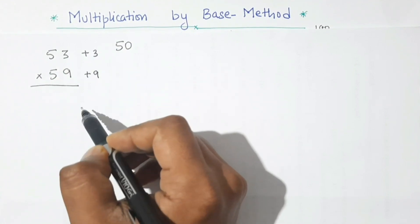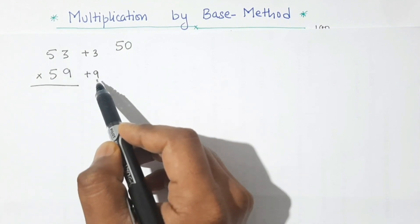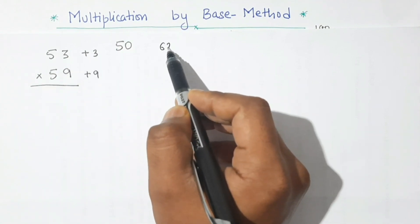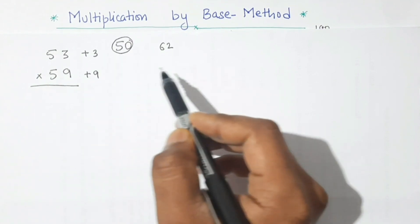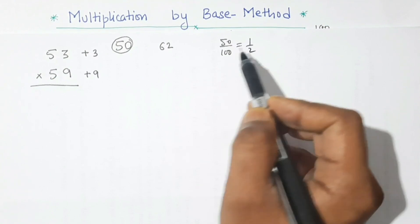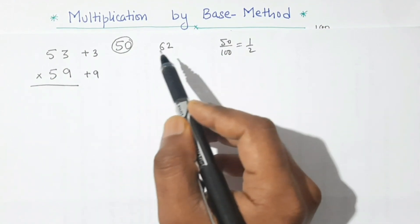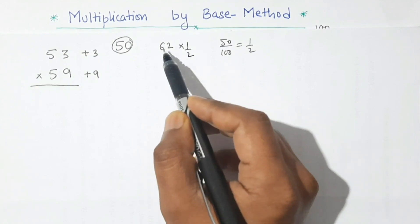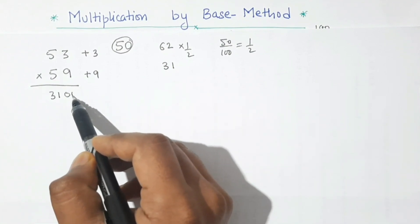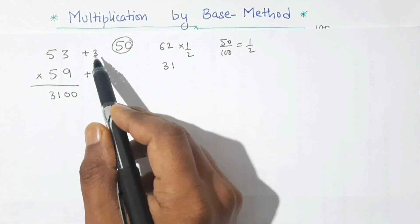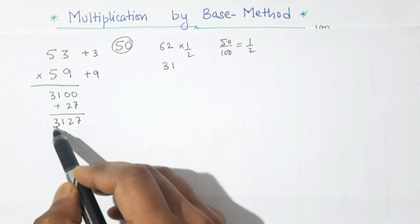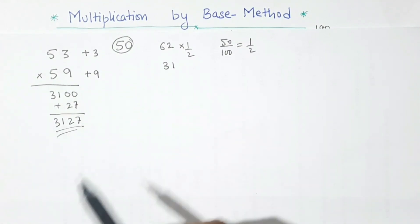We add: 53 plus 9, or 59 plus 3 — in both cases we get 62. Now, base 50 is half of 100, so the ratio is 1/2. We make 62 half, which gives 31, then place two zeros to get 3100. Multiplying the deviations: 3 × 9 = 27. Adding: our product is 3127.